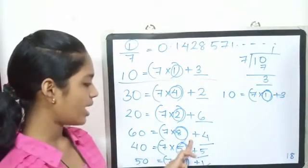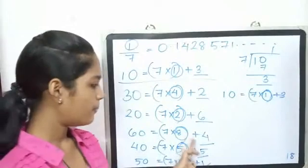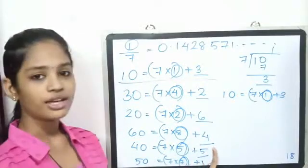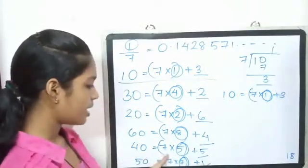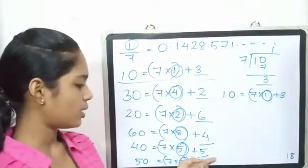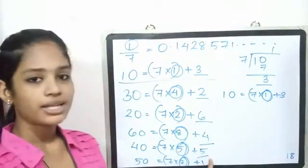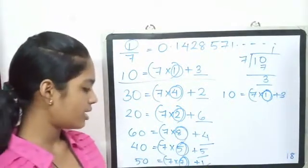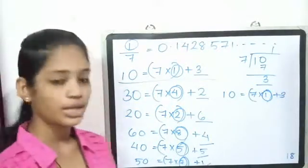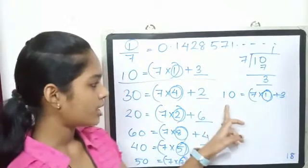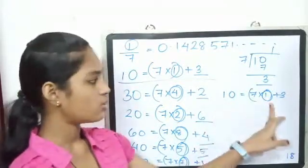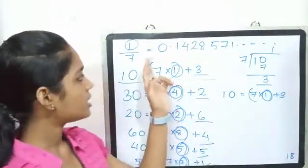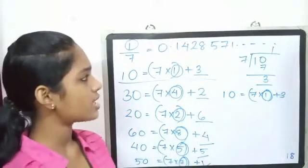Plus 4 is 60. Now, the reminder here is 4. 4 x 10 is 40. 7 x 5 is 35, plus 5 is 40. Now, the reminder here is 5. 5 x 10 is 50. 7 x 7 is 49, plus 1 is 50. Now, the reminder here is 1. 1 x 10 is 10. 7 x 1 is 7, plus 3 is 10. Now the result is 0.1428571.